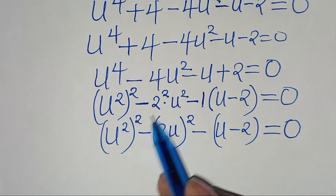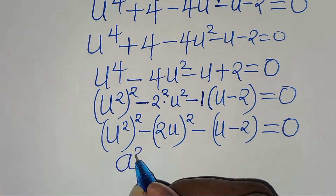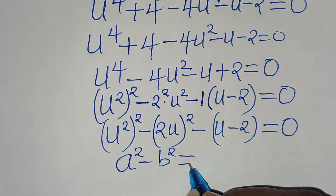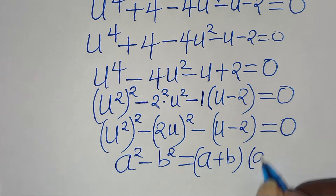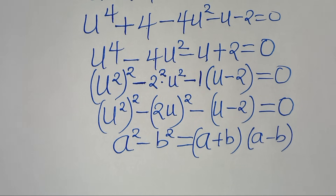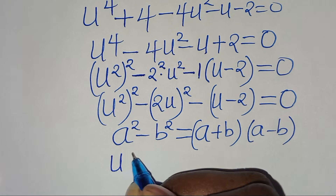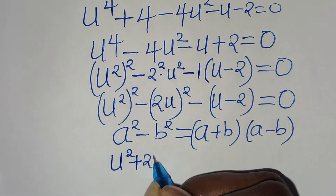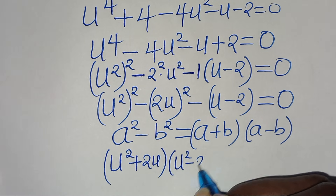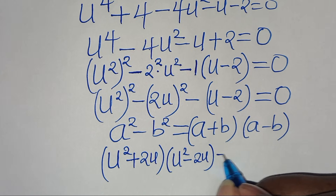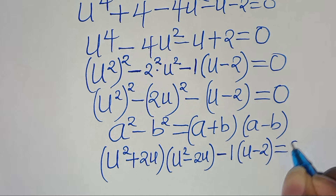Now (u squared)² minus (2u squared) is in the form of a squared minus b squared, which we can express as (a plus b)(a minus b). So this implies we have (u squared plus 2u)(u squared minus 2u), then subtract 1 times (u minus 2), this is equal to 0.